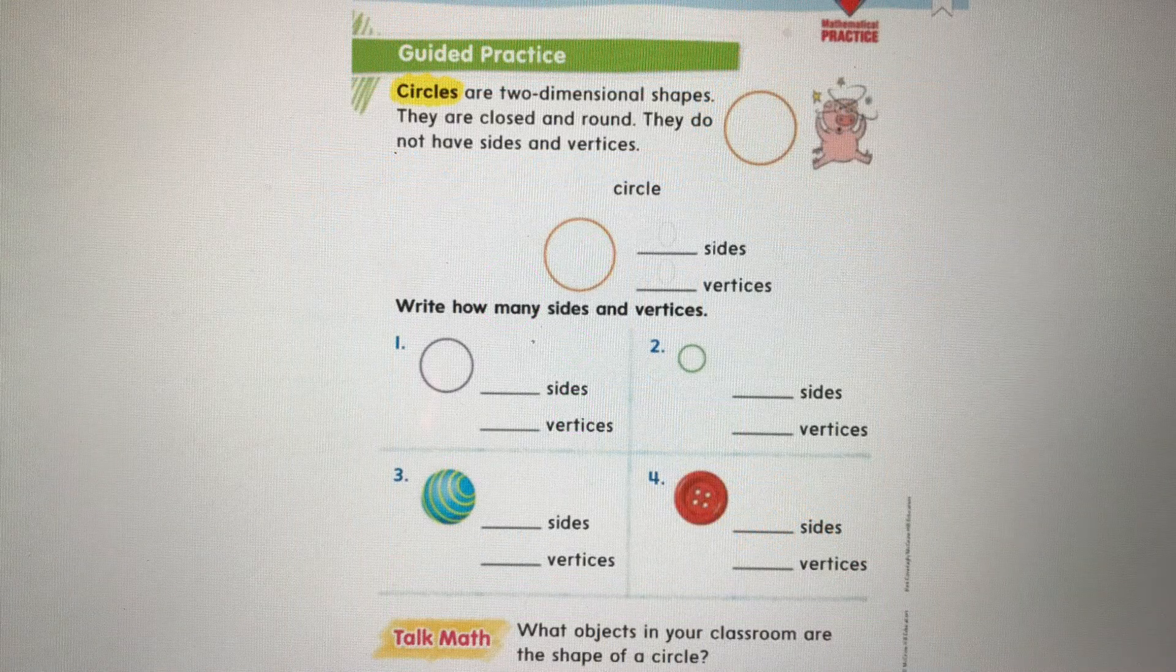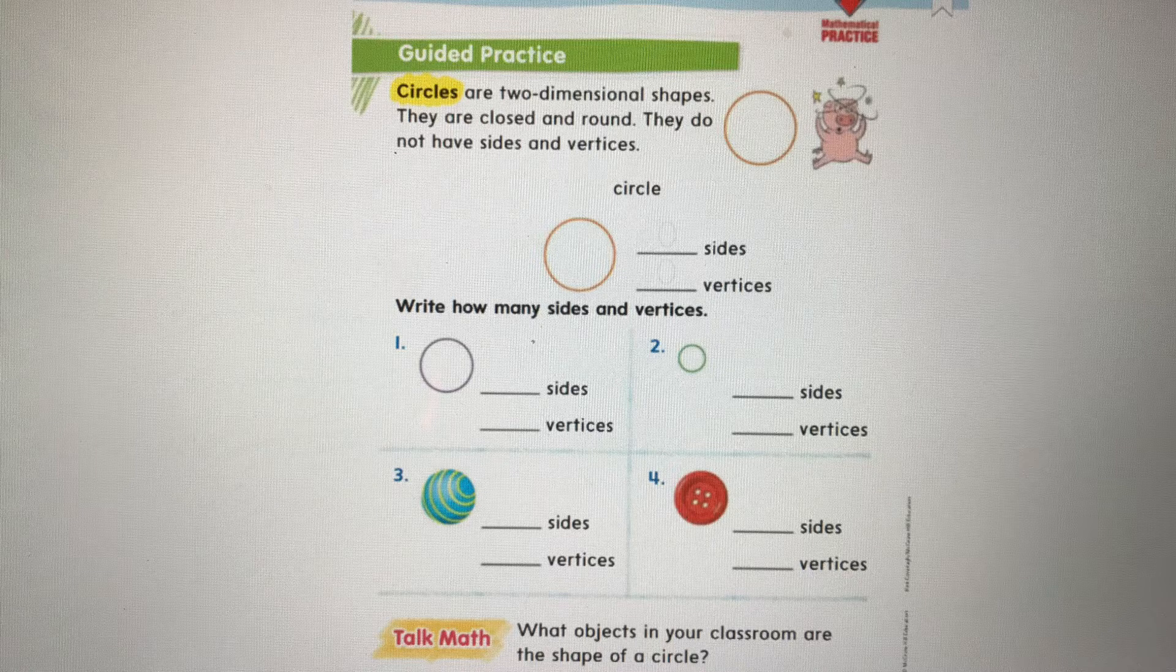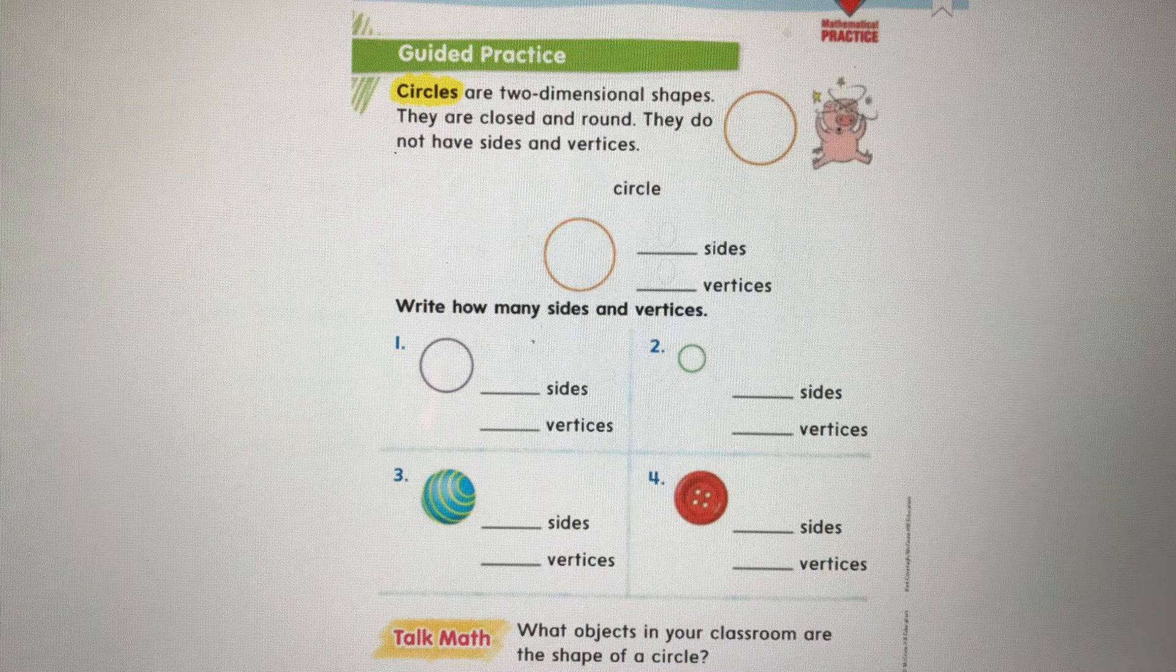Circles are two-dimensional shapes. They are closed and round. They do not have sides and vertices. Now, you can see our pig over there. He's been with us all week. He ran into the circle because it is closed. And a circle has zero sides and zero vertices. Go ahead and take your pencil and trace over the number zero. And then we'll get started on the next problems.